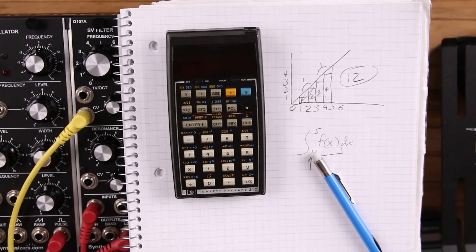And you can see it working there. It's working away. There we go. There's our answer of 12. So that's how to use the integration function on an HP 34C.